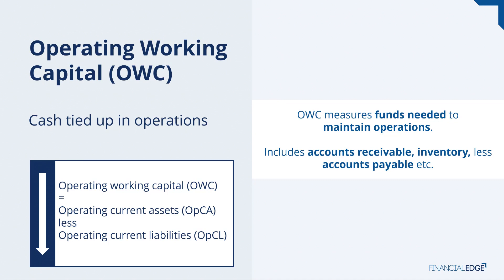What kind of things does it include? It includes operating current assets such as accounts receivable or inventory, less operating current liabilities such as accounts payable. To walk through a quick example: imagine you had 500 of inventory and 500 of accounts receivable — that's cash tied up in operations.